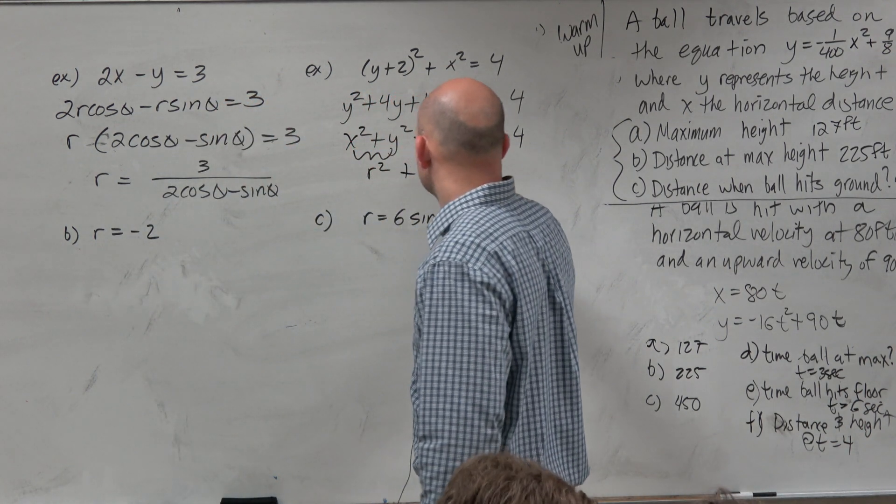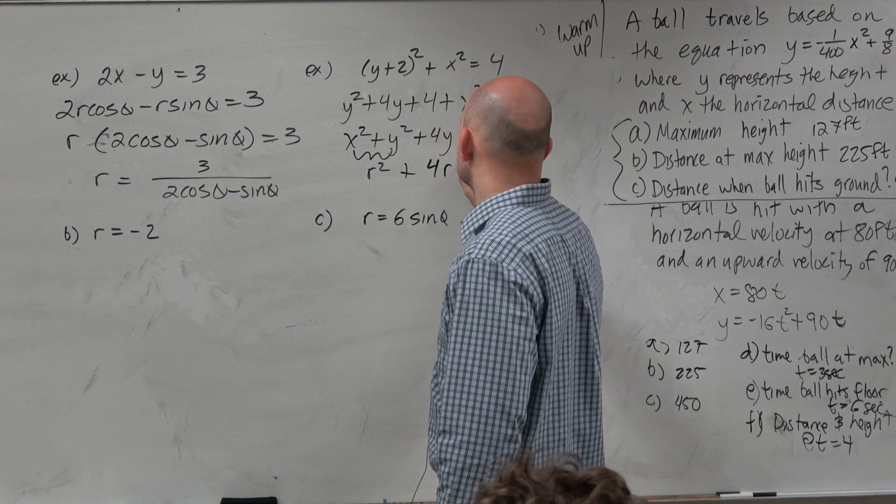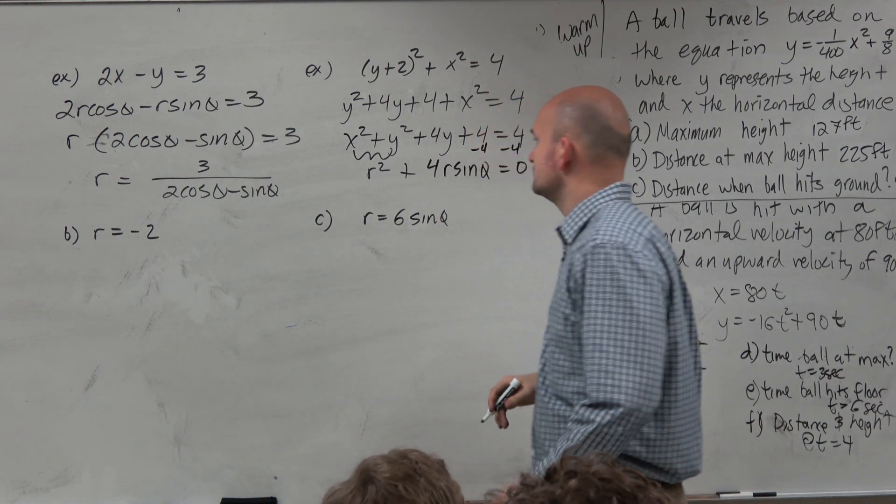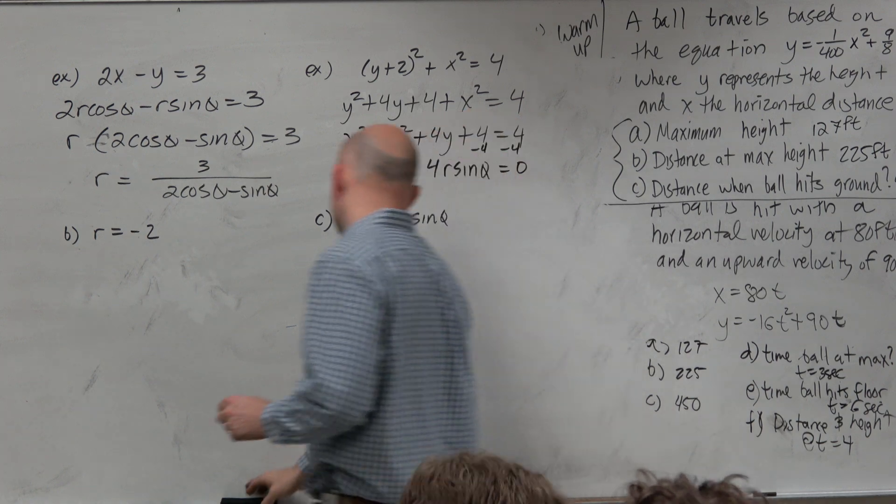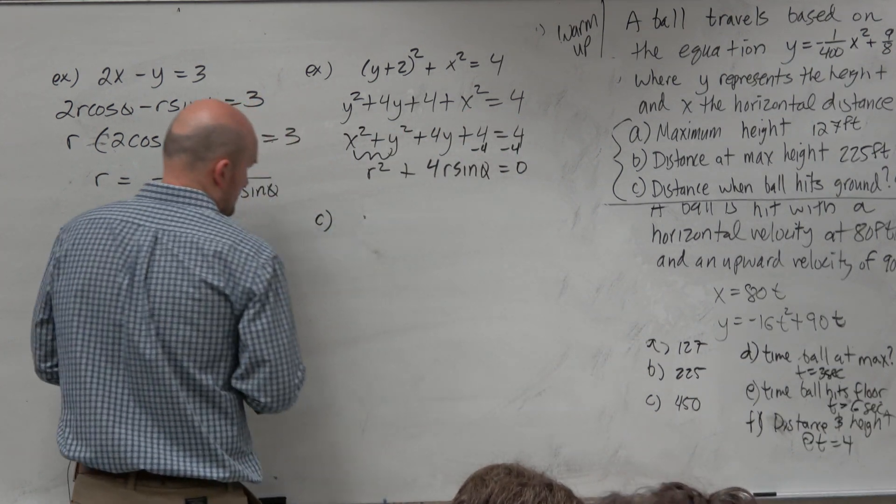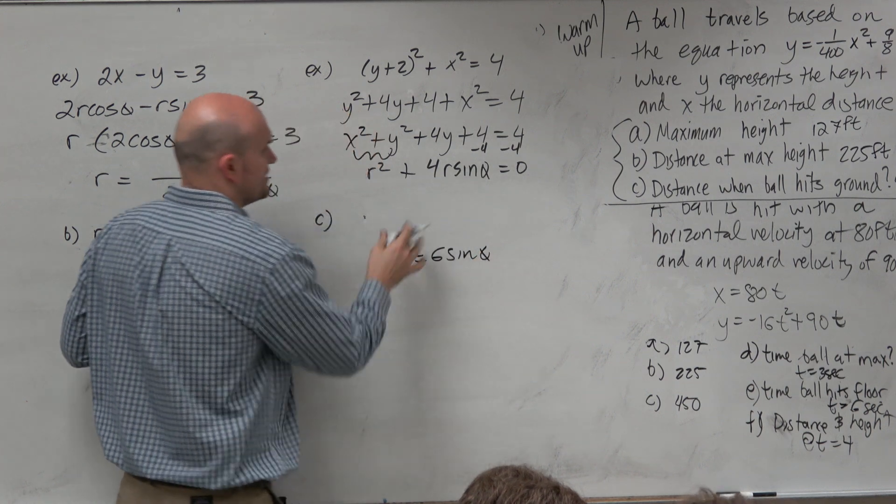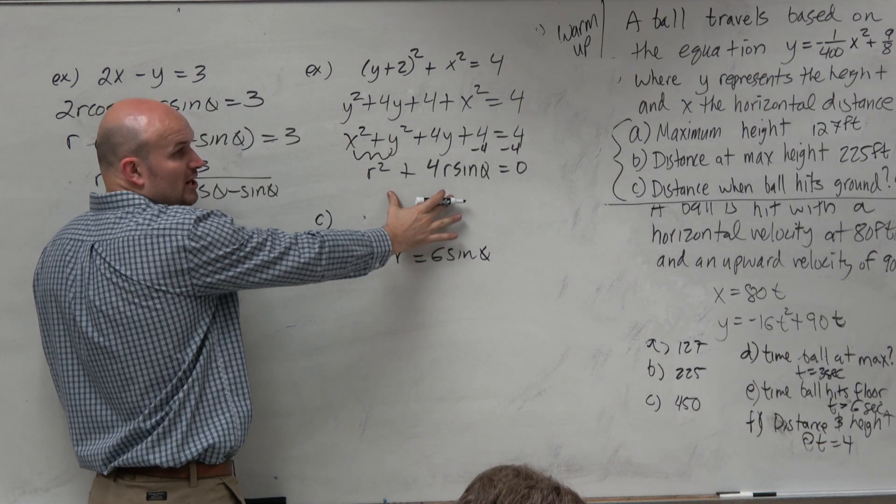4 times y is going to be 4r·sin(θ). And you could subtract the 4 on both sides. Now I'm kind of running out of space here. So now that's done. No more x's and y's.